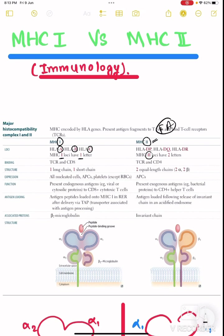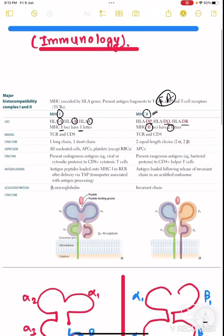Whereas MHC 2 has two letters. The loci of MHC 2 has two letters: DP, DQ, and DR. So where do they bind? MHC class 1 binds to CD8 and T cell receptor, and MHC class 2 binds to T cell receptor and CD4. How can you remember? 8 in 2, 1: MHC class 1 times 8 equals 8, and CD4 times 2 of MHC class 2 equals 8 again. So you can remember it by this method.